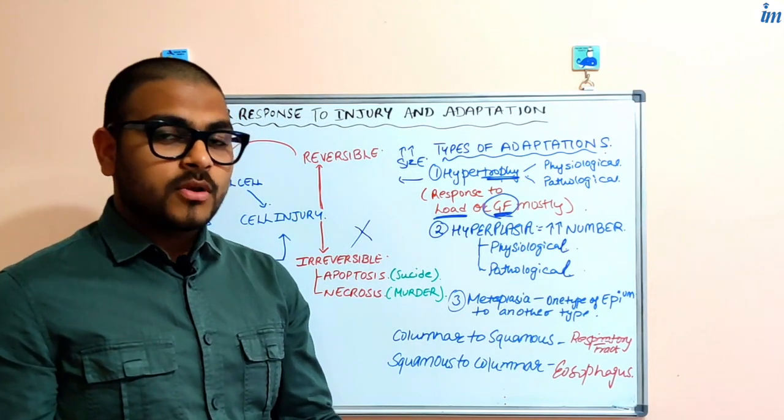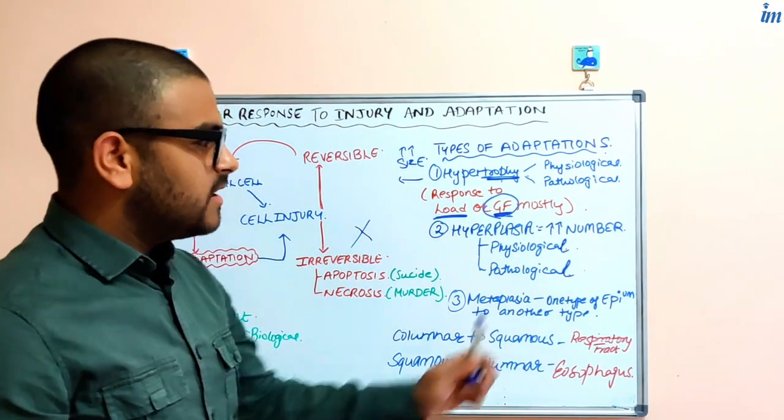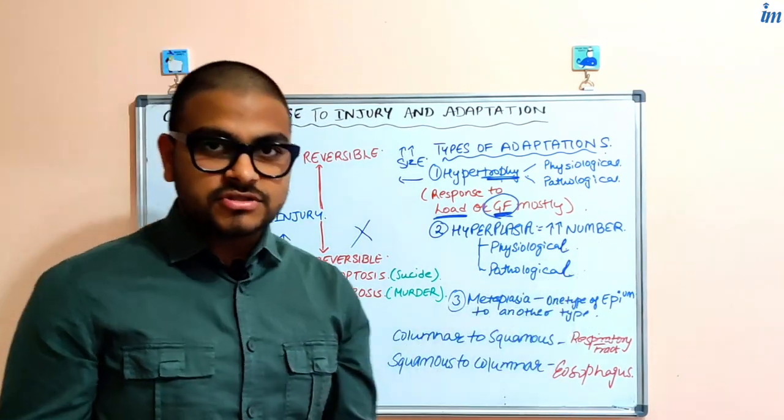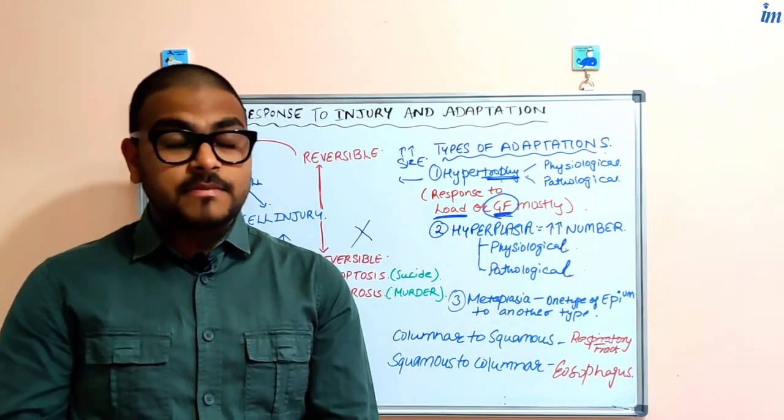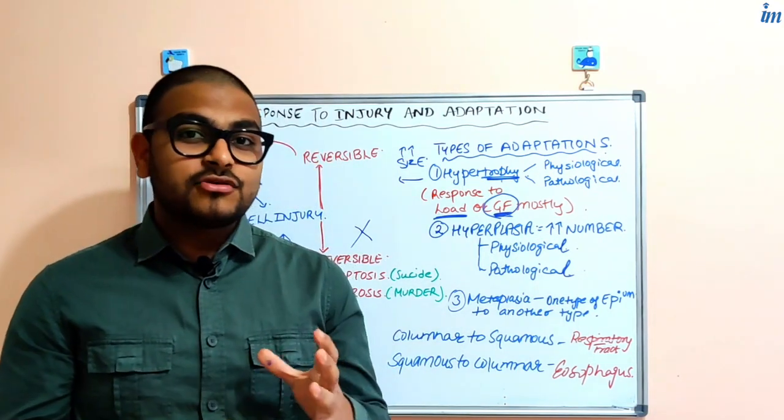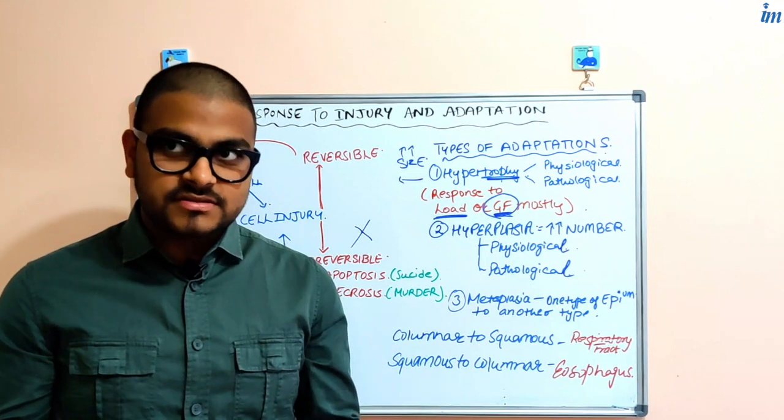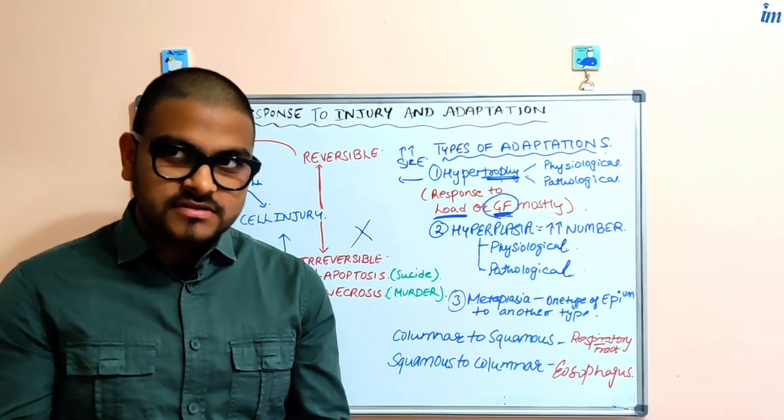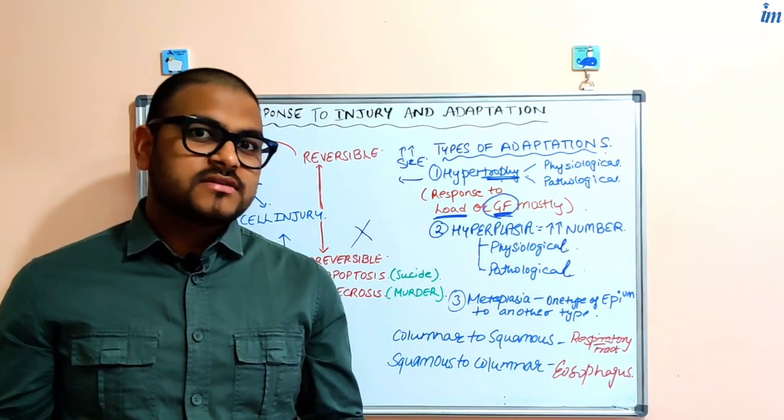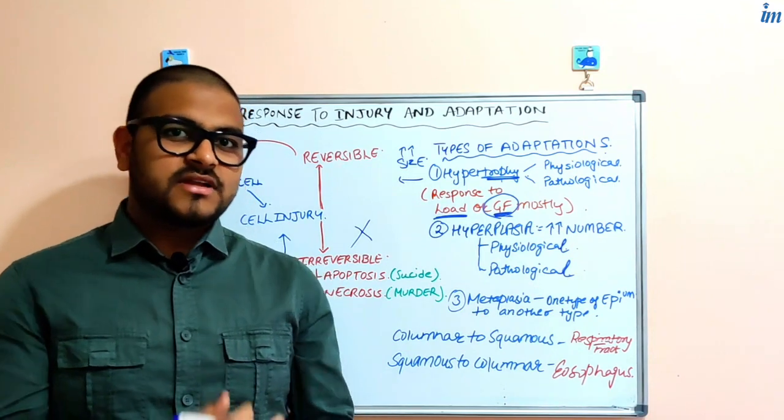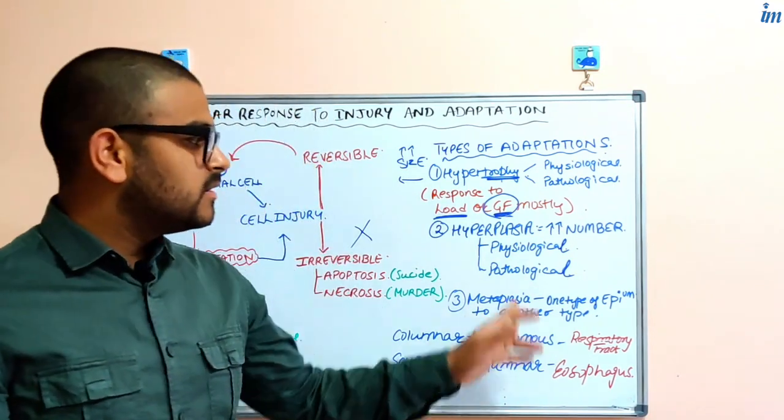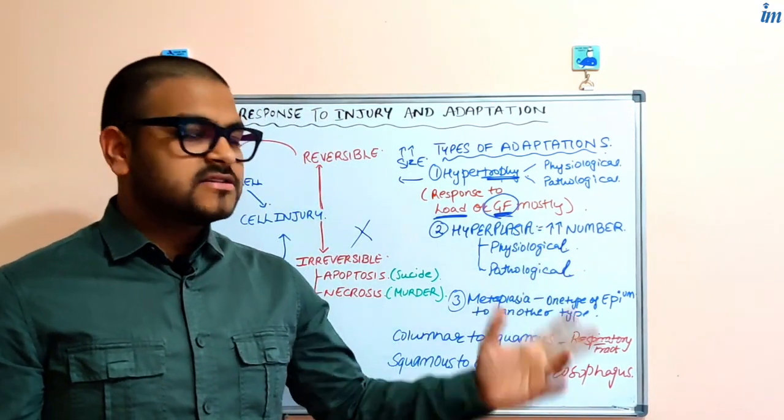It can also be physiological and pathological. Physiological hyperplasia is glandular epithelium of the breast undergoing hyperplasia. In what cases? During lactation, because it has to produce more milk.